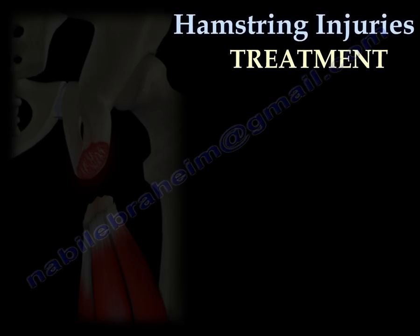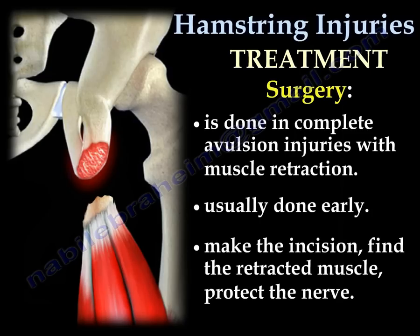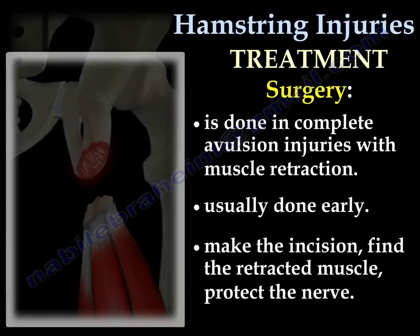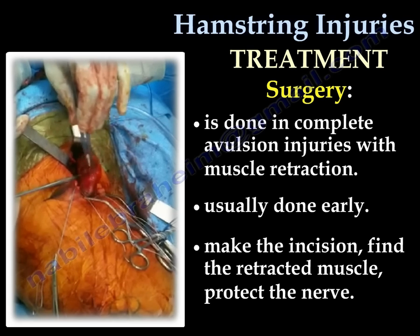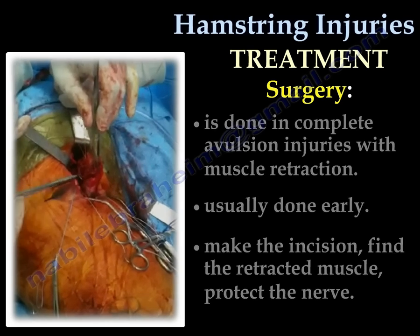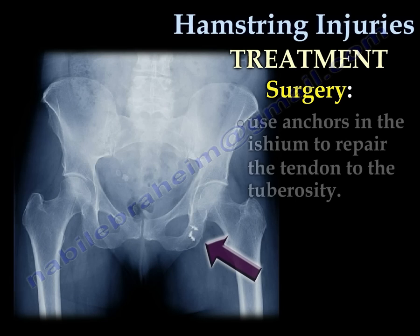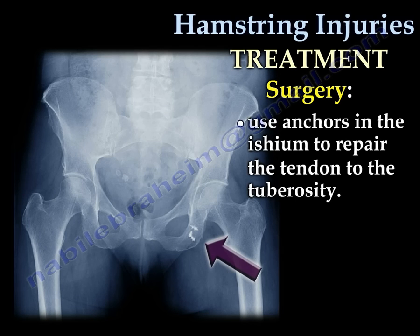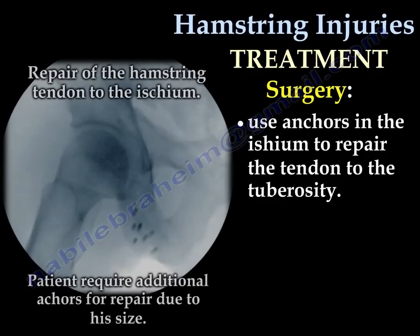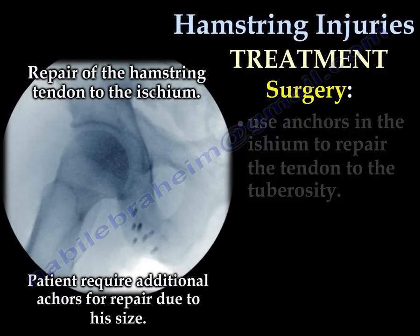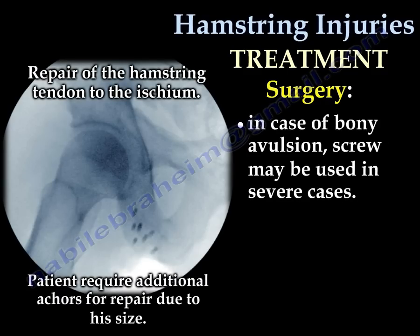In the case of avulsion injury, surgery is performed early for complete avulsion injuries with muscle retraction. An incision is made, the retracted muscle and tendon are found, and the nerve is protected. Anchors in the ischium are used to repair the tendon to the tuberosity. In cases of bony avulsion, screws may be used to fix the bony fragment to the ischium.